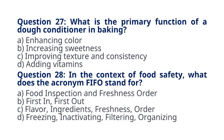Question 27. What is the primary function of a dough conditioner in baking? A. Enhancing color. B. Increasing sweetness. C. Improving texture and consistency. D. Adding vitamins. The correct answer to question 27 is option C. Improving texture and consistency. Explanation. Dough conditioners improve the texture and consistency of dough by enhancing gluten formation and gas retention during baking.